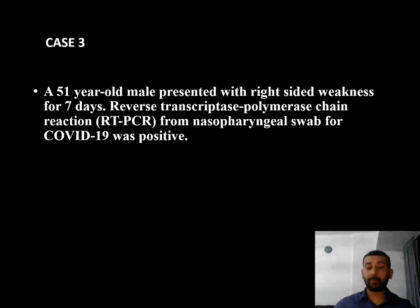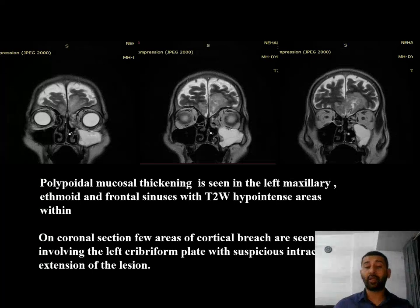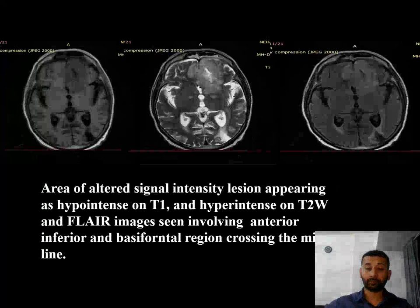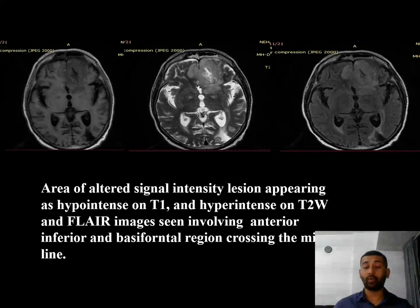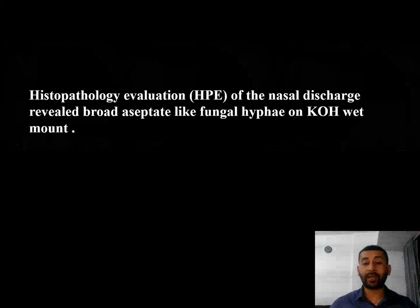Case 3: A 51-year-old male presented with right-sided weakness for 7 days. RT-PCR from nasopharyngeal swab was positive. Polypoidal mucosal thickening is seen involving the left maxillary, ethmoid, and frontal sinuses with T2 hypointense areas. On coronal section, areas of cortical breach are seen involving the left cribriform plate with suspicious intracranial extension of the lesion. Areas of signal intensity abnormalities appearing hypointense on T1 and hyperintense on T2 involve the anteroinferior and basifrontal region crossing the midline. Histopathology evaluation of the nasal discharge reveals broad aseptate fungal hyphae on KOH preparation.